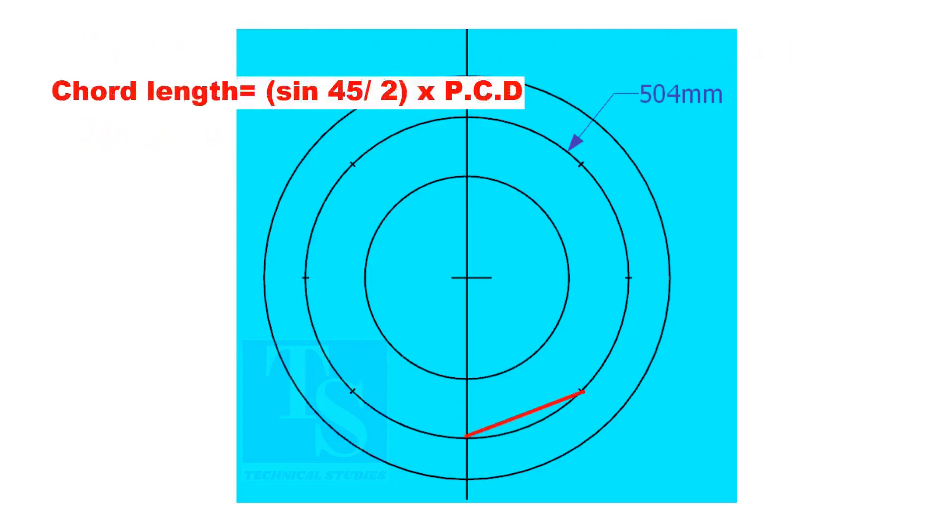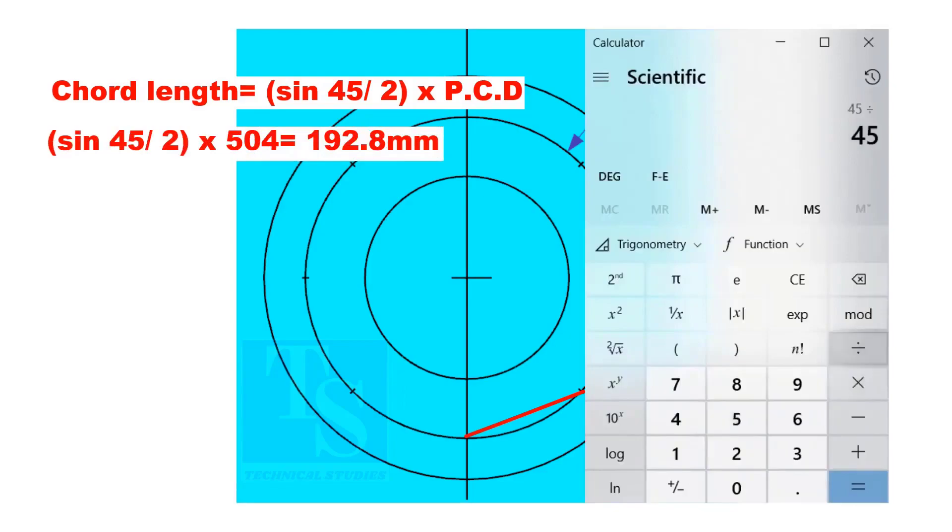Cord length equals sine 45 divided by 2 multiplied by PCD. The cord length is 192.8 millimeters.